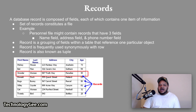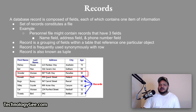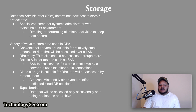Records: a database record is composed of fields, each of which contains one item of information. A set of records constitutes a file. For example, a personnel file might contain records with three fields: a name field, an address field, and a phone number field. More specifically, a record is a grouping of fields within a table that references one particular object. The term record is frequently used synonymously with row, and a record is also known as a tuple.